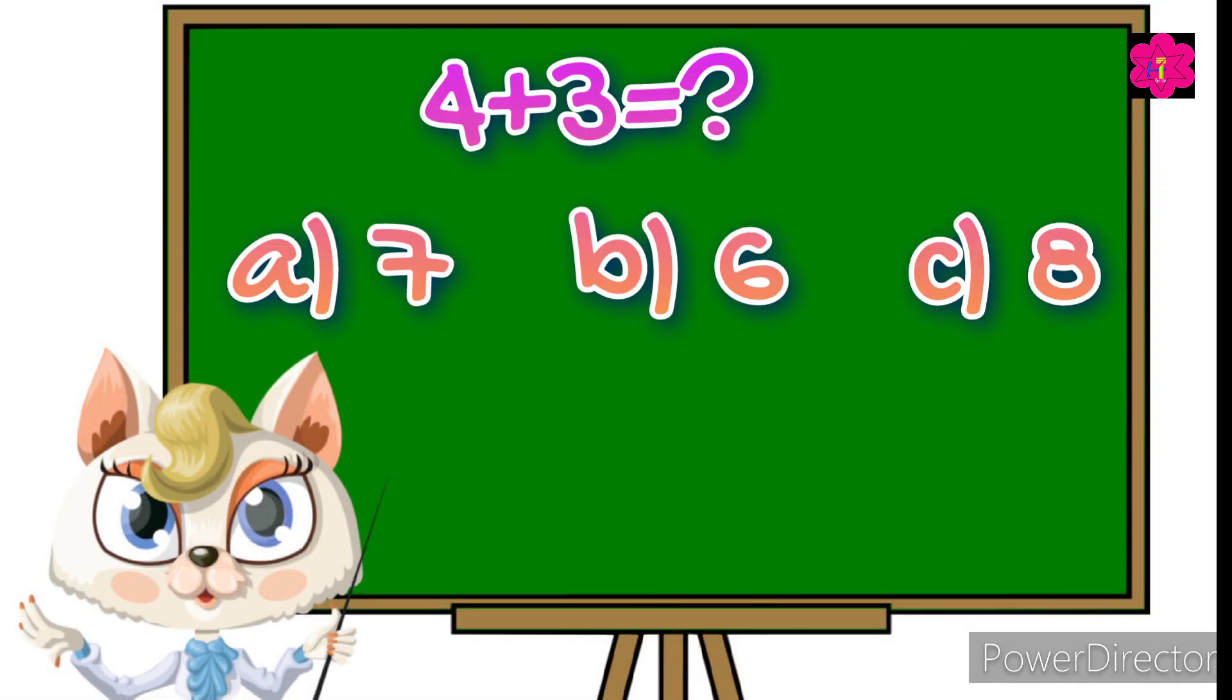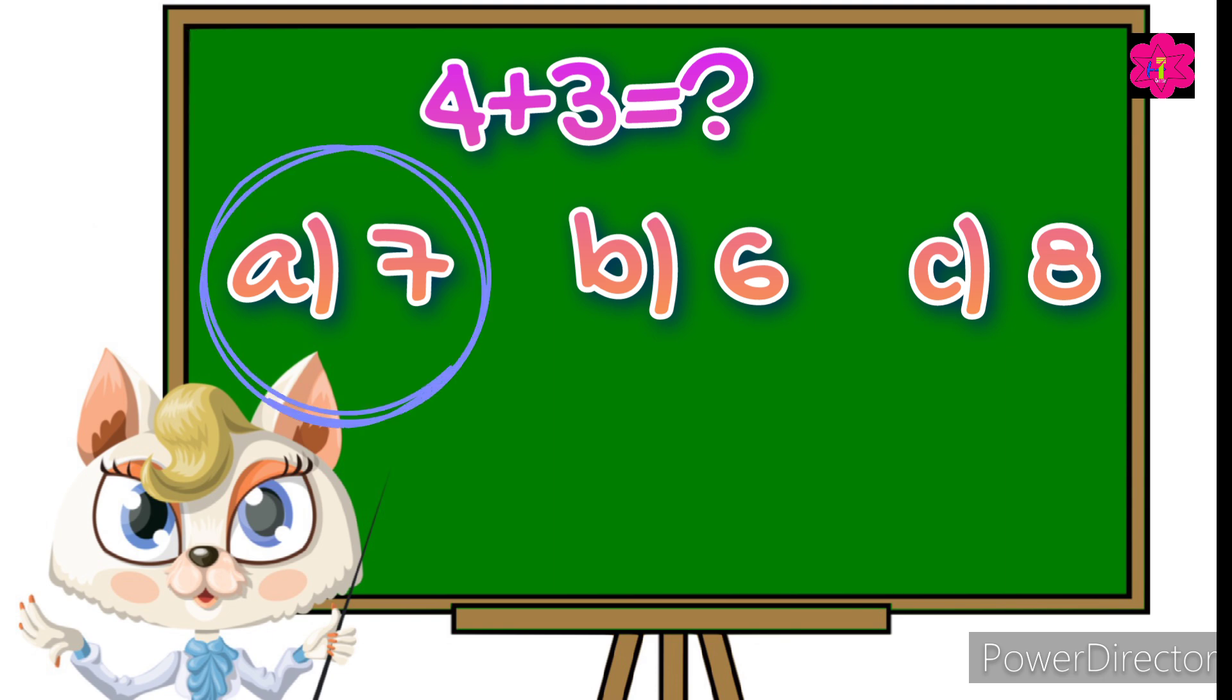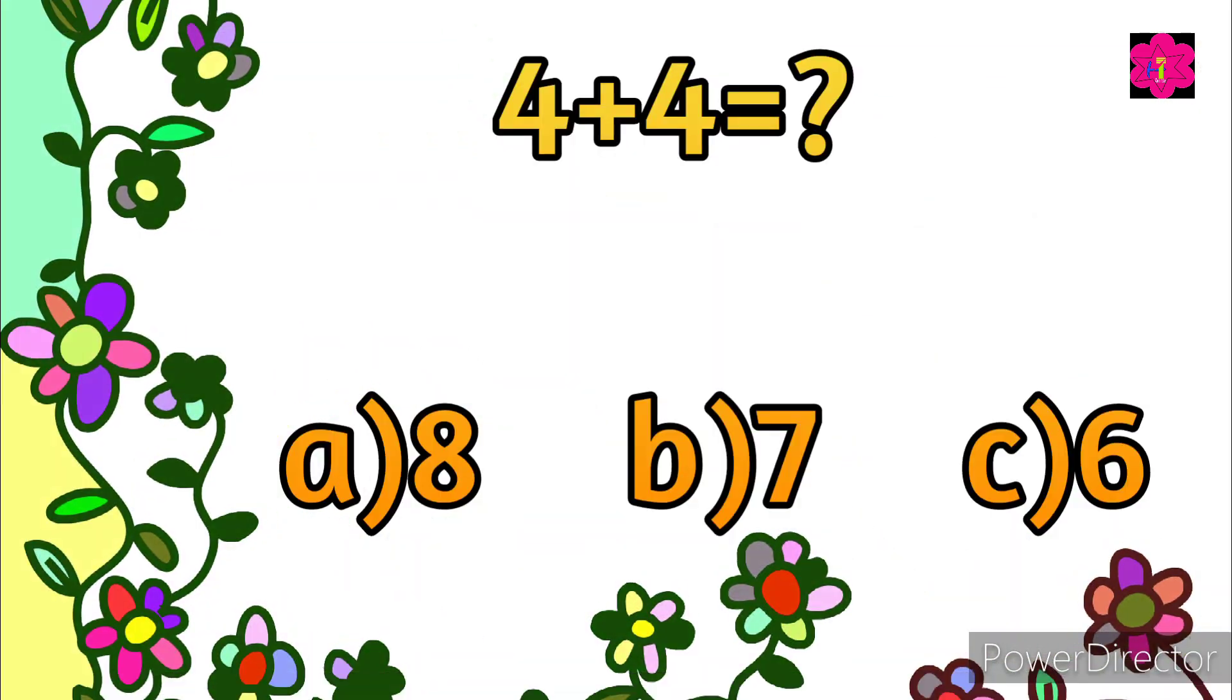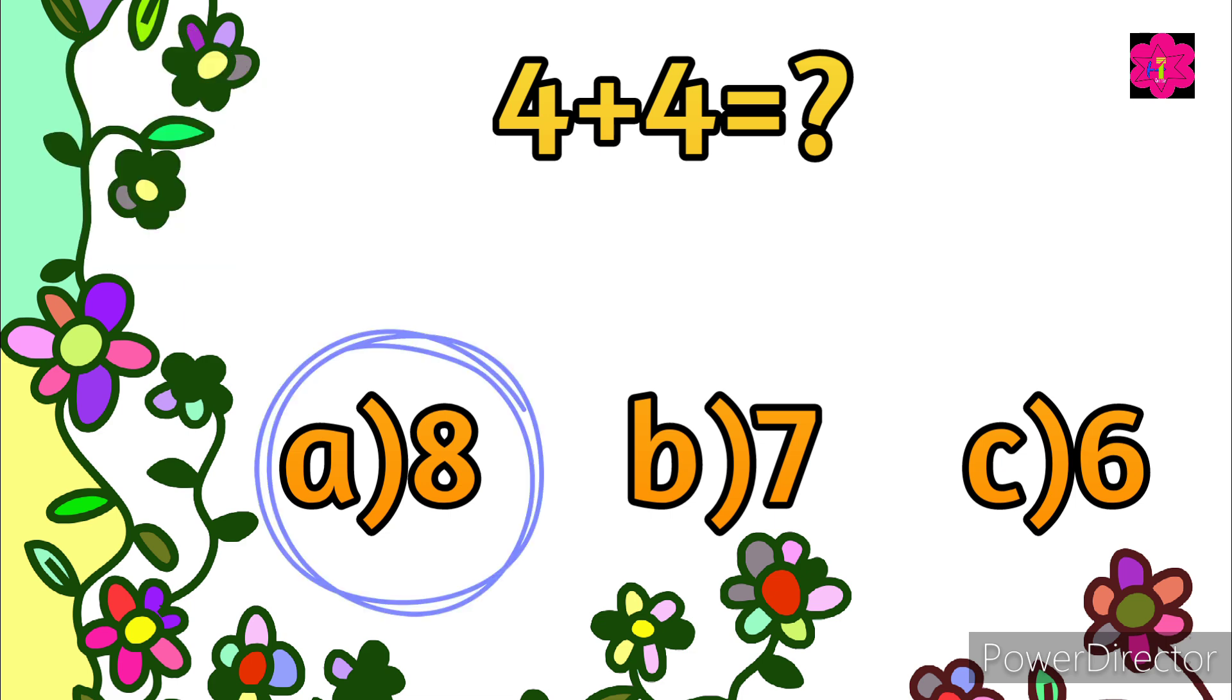Okay, your time starts now. Correct answer is 7. 4 plus 3 is equal to 7. Yes, correct answer is 8. 4 plus 4 is equal to 8. Ready for the next?